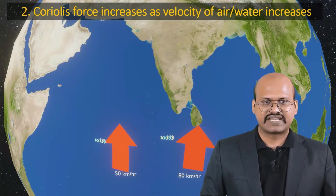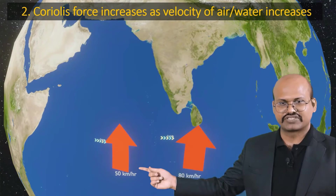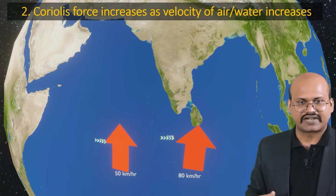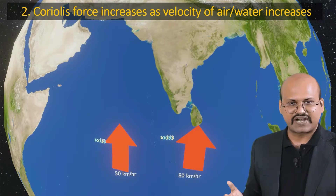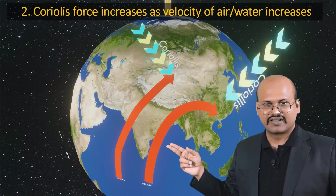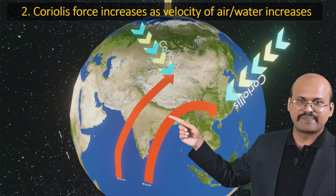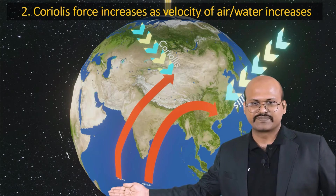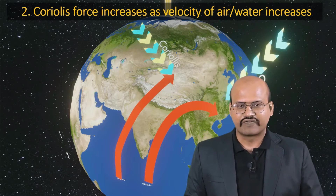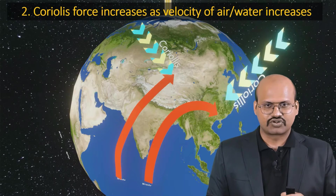The second characteristic is that Coriolis force increases as the velocity of air or water increases. Consider two wind particles with different velocities — 50 km/h and 80 km/h — close to the equator with very small Coriolis force. As these particles move further from the equator, the Coriolis force increases on both, but the particle moving at 80 km/h gets deflected much more than the particle at 50 km/h. Therefore Coriolis force is directly proportional to the velocity of the fluid: faster-moving air or water is deflected more, slower-moving fluid is deflected less.